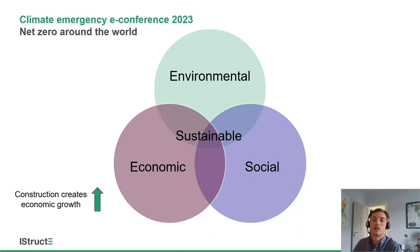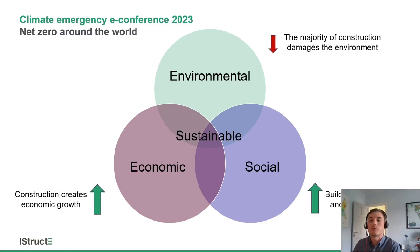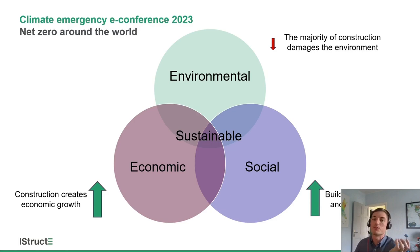Our goal is that with construction, we're creating economic growth — a positive from an economic point of view. But it's a sad fact that the majority of construction at the moment does damage the environment, so we need to find a way of minimizing that damage. Buildings are very important; we can't just stop constructing because buildings serve people's and society's needs. If you're an engineer, you'd like an optimization problem: minimize the environmental damage whilst maximizing the economic and social benefits of construction.